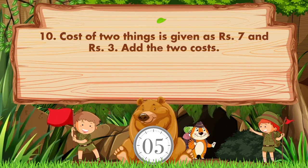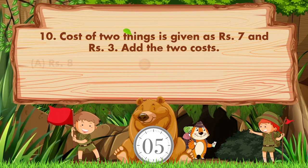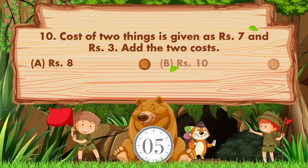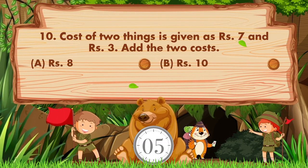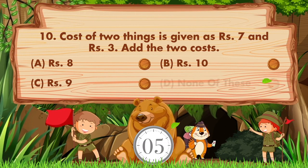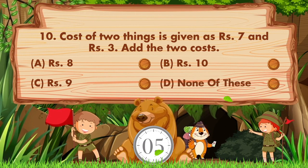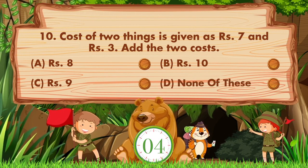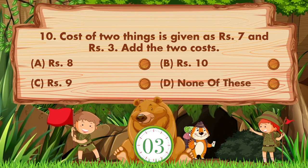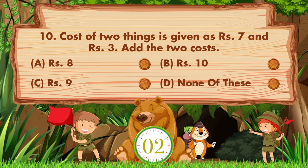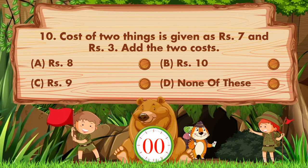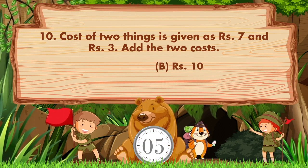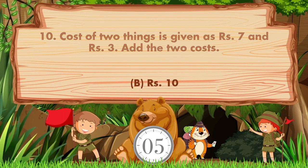Cost of two things is given as 7 rupees and 3 rupees. Add the two costs. Option a is 8 rupees, option b is 10 rupees, option c is 9 rupees, option d is none of these. The answer is option b: 10 rupees.